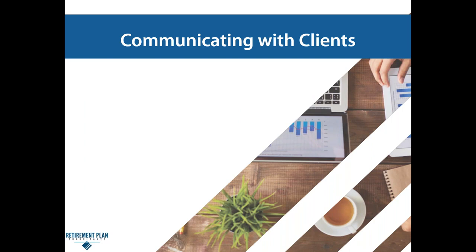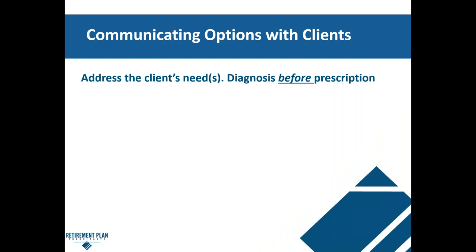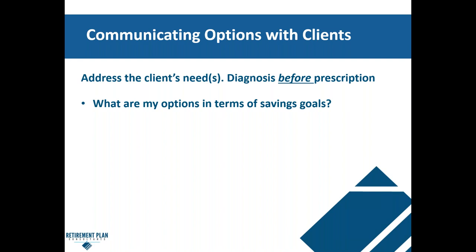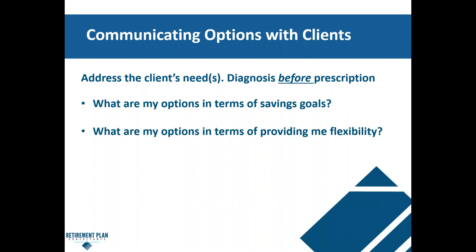Now I want to step back and discuss communicating with clients and how you can handle that as the advisor. The first thing is addressing the client's needs — talking to them about what the goals are going to be and diagnosing before providing the prescription. That's really where you can lean on the regional directors. We can help you with what those specific questions can be and be involved in the meeting directly. We don't expect you to be experts on that. What are my options in terms of savings goals? That kind of goes back to the original discussion about those different limits. In an ideal plan, how much would they be able to contribute?